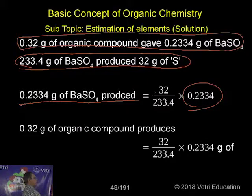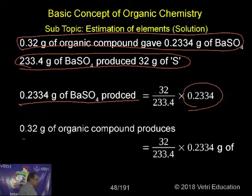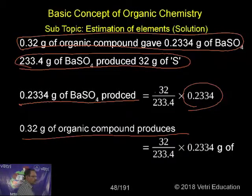0.32 grams is giving 0.2334, that is the result from which we are doing the calculation. 0.32 grams of organic compound produces 32 by 233.4 into 0.2334 grams of sulfur.